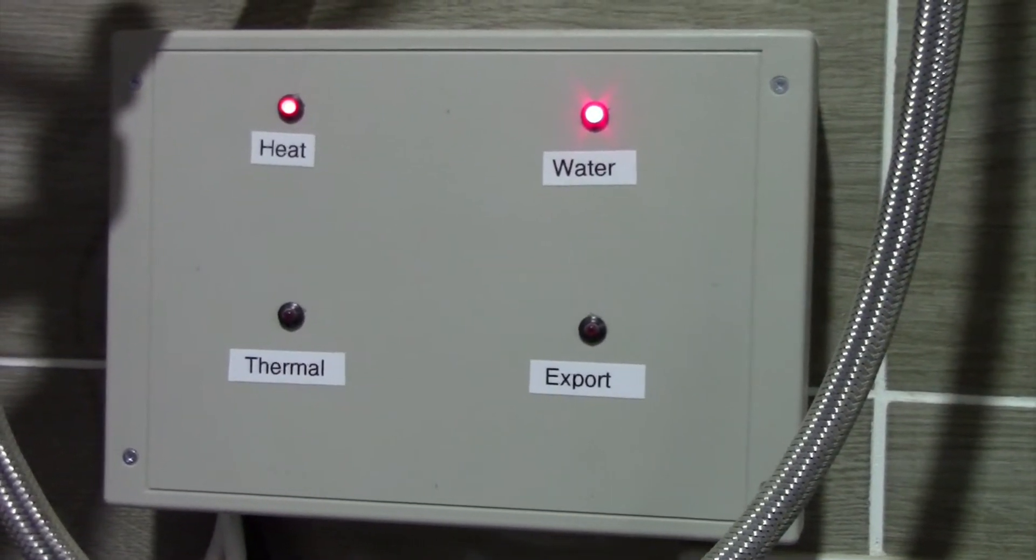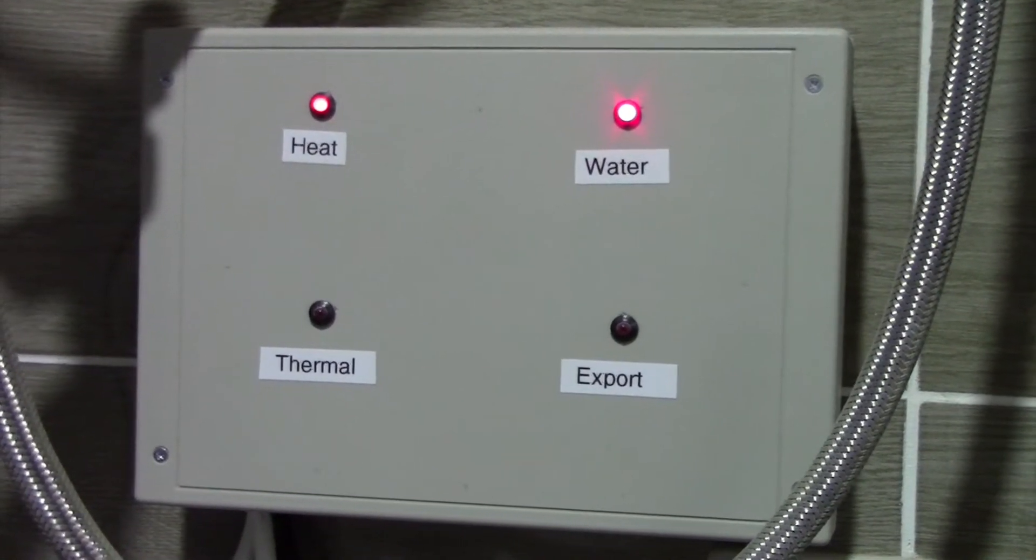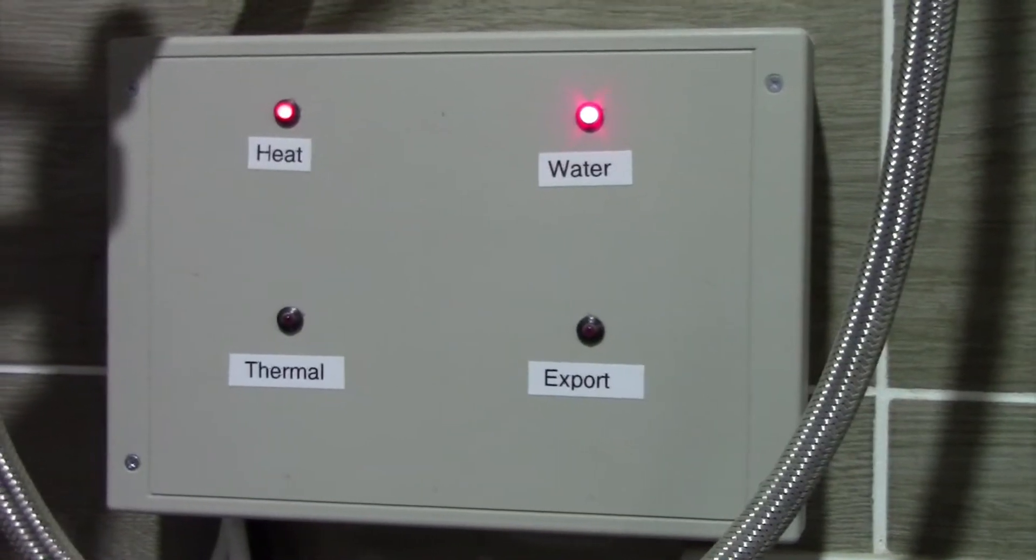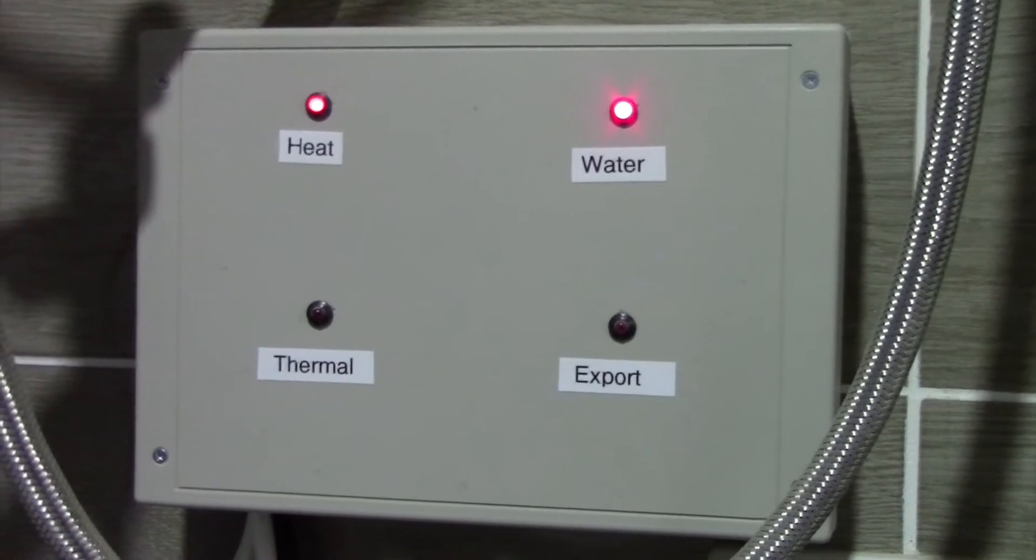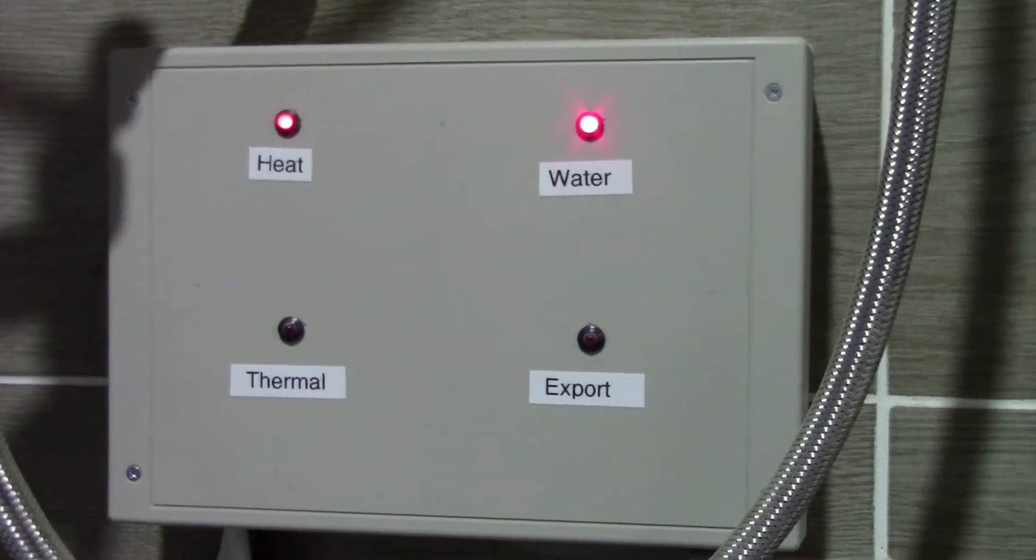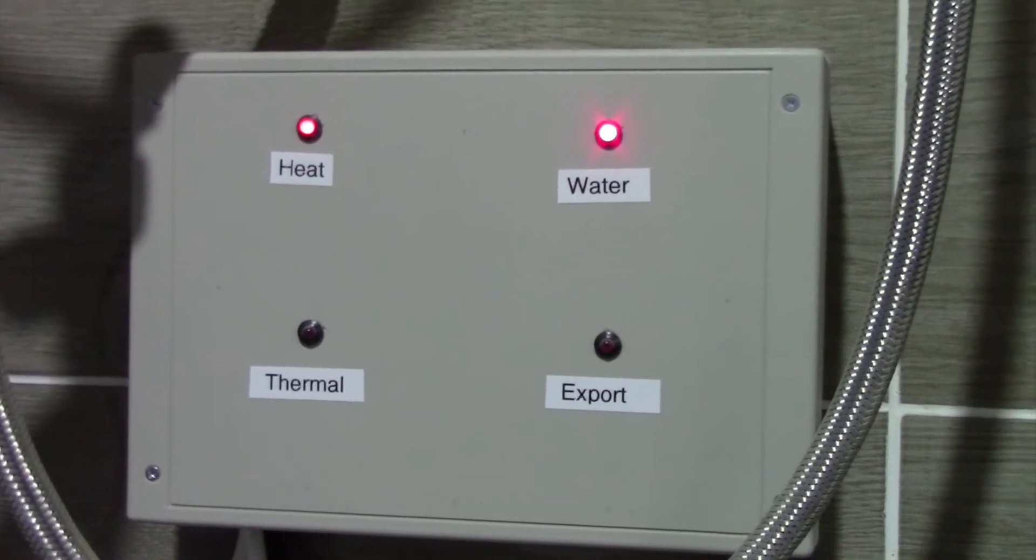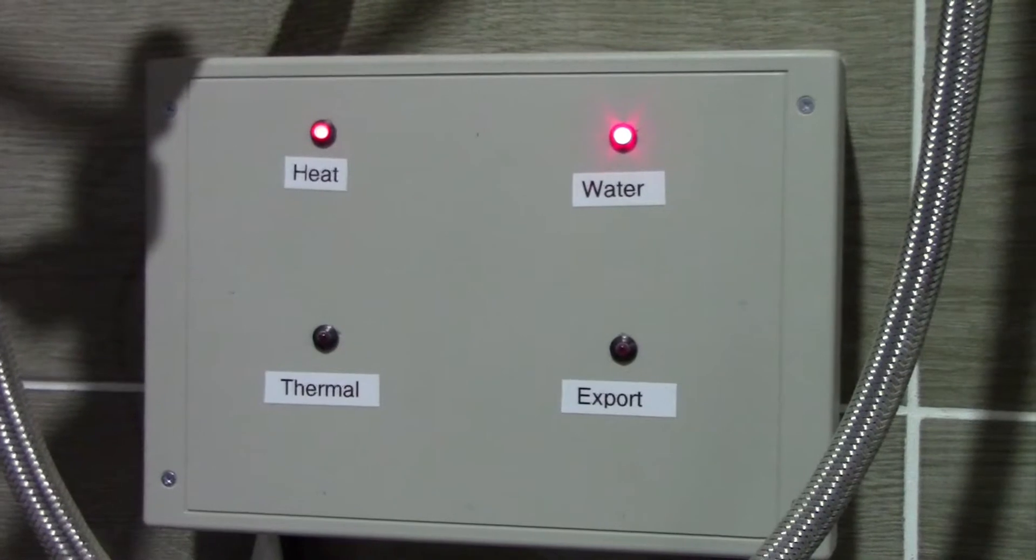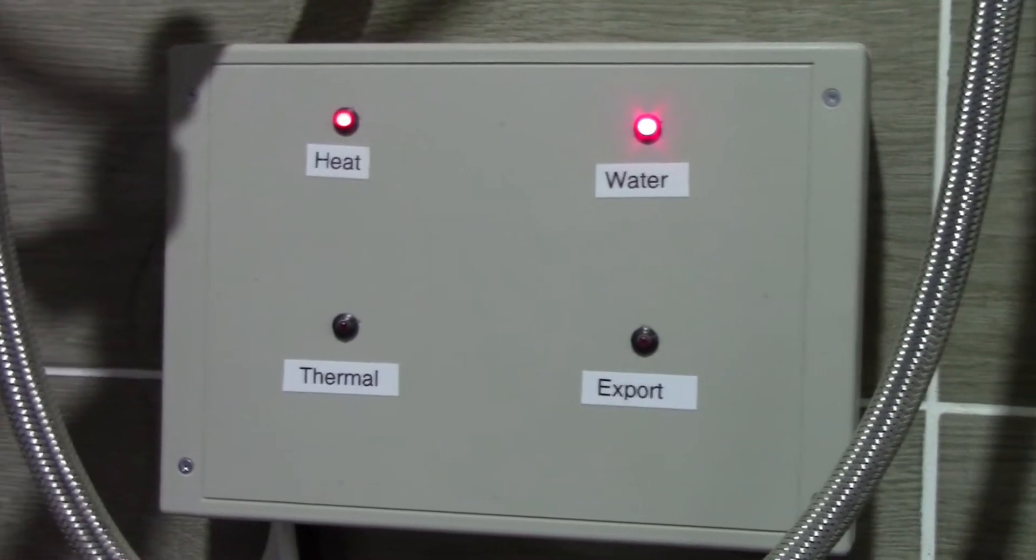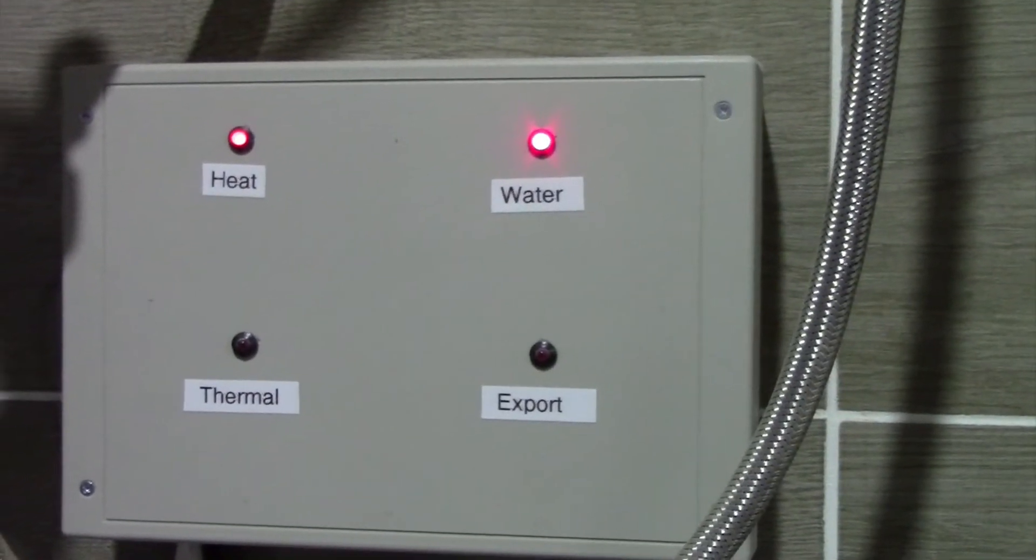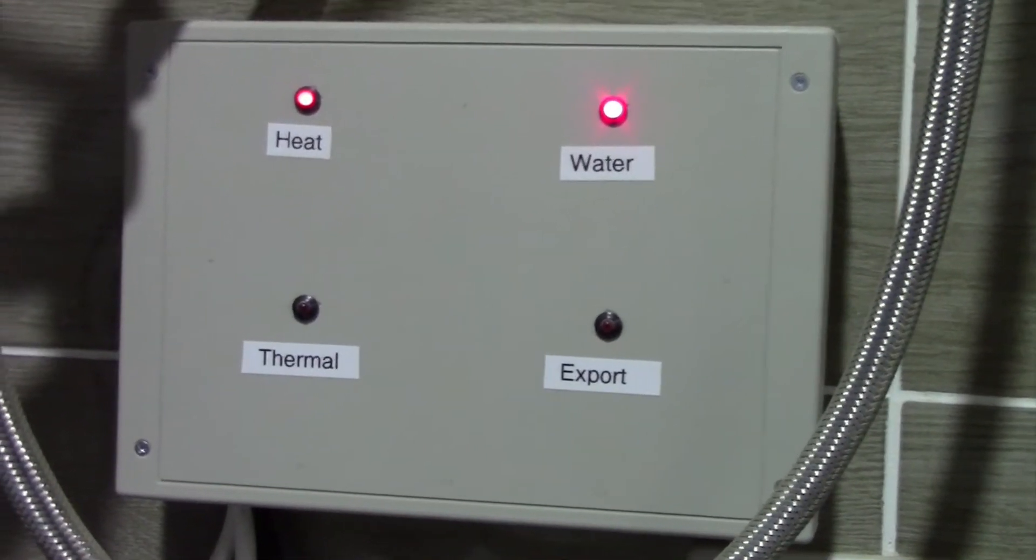With export, it's using the electric immersion to heat the water in the tank, but only when surplus energy is being produced by my solar electric panels. On a sunny day with lots of electric produced that I'm not using, rather than wasting it, it switches on the immersion to heat the water. That's where that LED comes in.